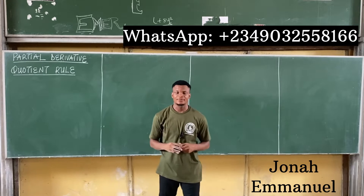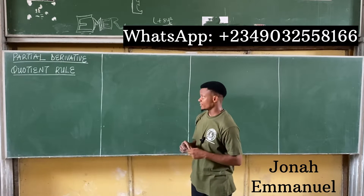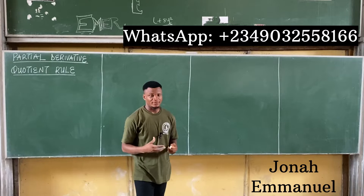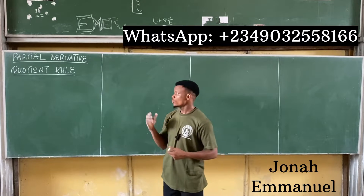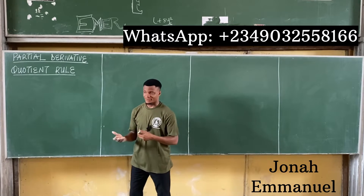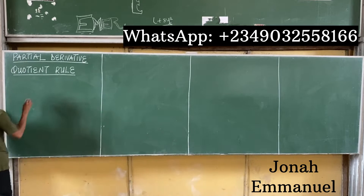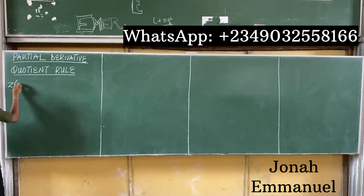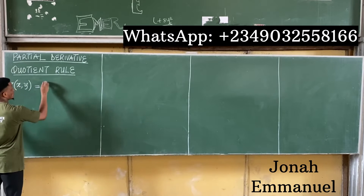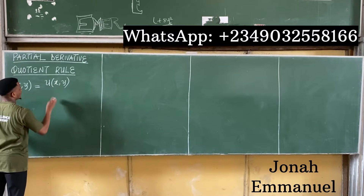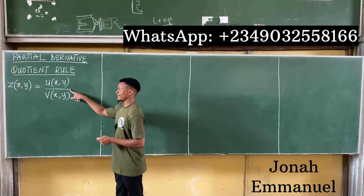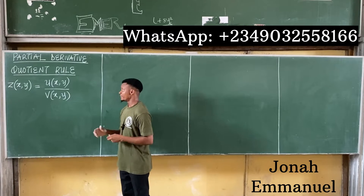Hello and welcome to today's class. We'll be looking at partial derivatives using the quotient rule. First, recall that a quotient is simply the result of division, so we use the quotient rule when we are doing the division of terms or division of functions. Now, what's the formula for this? Let's say I have a function z of two variables x and y, equal to another function u(x,y) all over v(x,y). Since we have a division sign here, it becomes a quotient rule problem under partial derivatives.